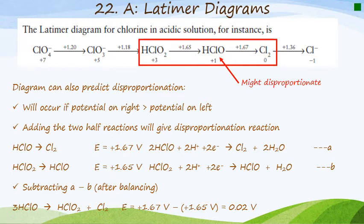So what you see over here is that this is the potential for this couple here and this is the potential for this couple here. However, this value is larger than this value and it is on the right. So one point six seven is on the right of the one point six five. So that indicates that this species here, the hypochlorite, may disproportionate. So the Latimer diagram therefore tells us a fair amount of information.